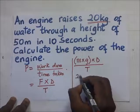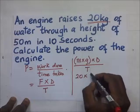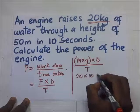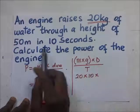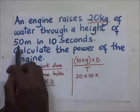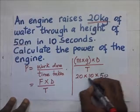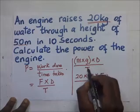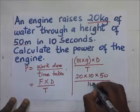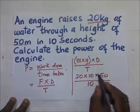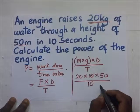So force equals mass times gravity times distance, divided by time taken. The mass is 20 kilograms, multiplied by gravity which is 10, multiplied by the distance of 50 meters, divided by the time taken which is 10 seconds. That gives us our answer.